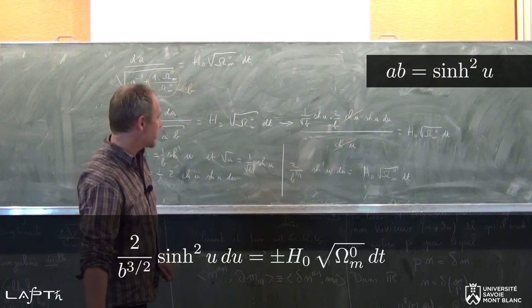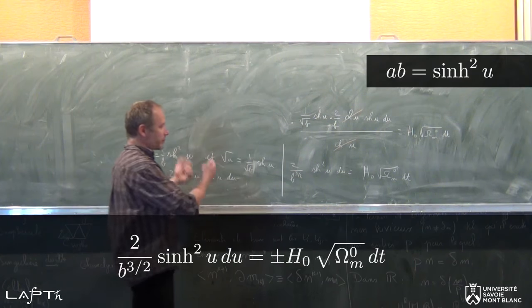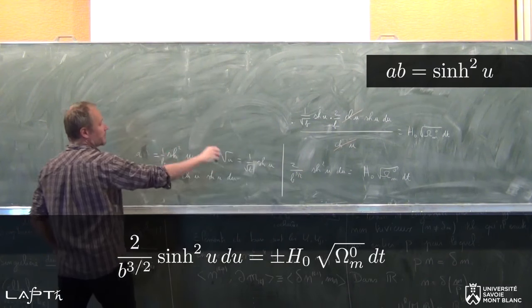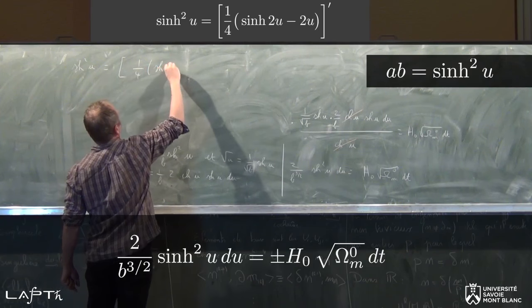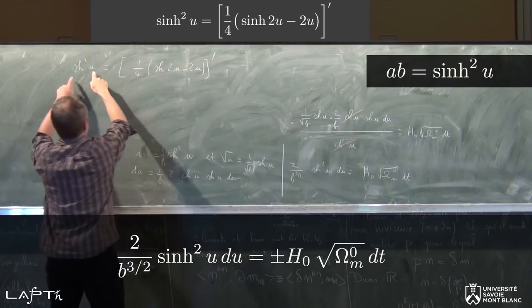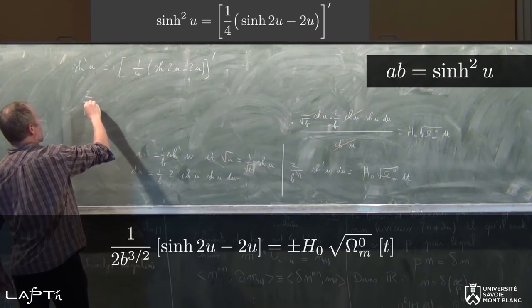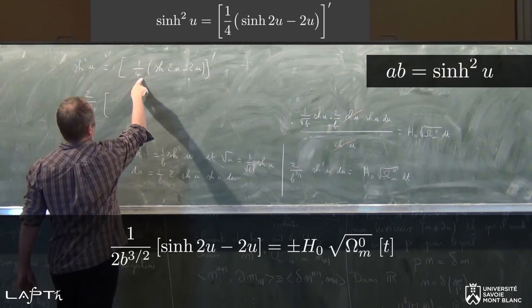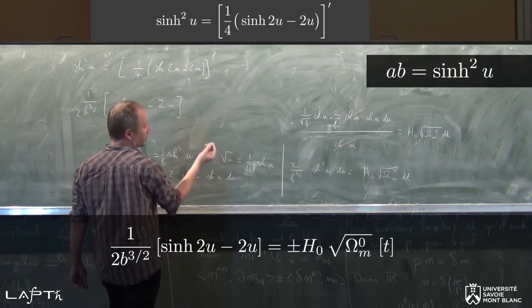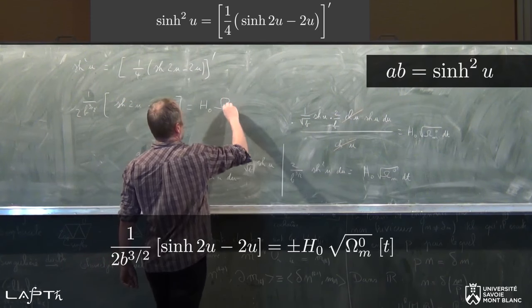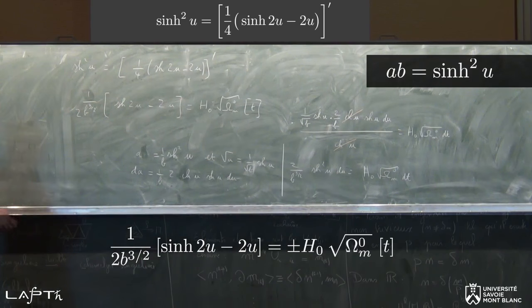Il se trouve qu'intégrer sinh²(u) est quelque chose d'élémentaire. La primitive de sinh²(u), c'est (1/4) sinh(2u) − (1/2)u. Donc la dérivée de ça donne bien sinh². Quand on intègre ça, on trouve (2/b^{3/2}) fois [1/4 sinh(2u) − (1/2)u] pris entre les bornes, égal à H₀ racine de Ω_M0 fois t entre les bornes d'intégration. Je vais intégrer entre t = 0 — c'est-à-dire maintenant, avec a = 1 — et un instant t quelconque.